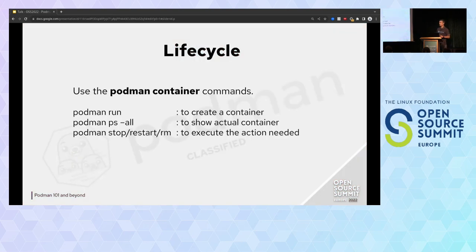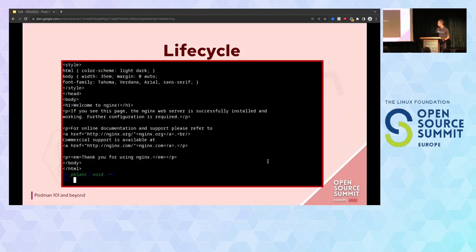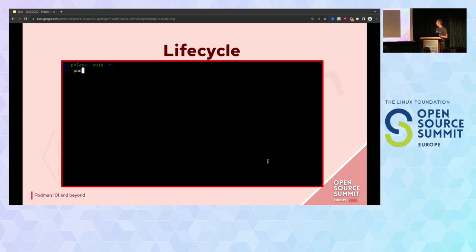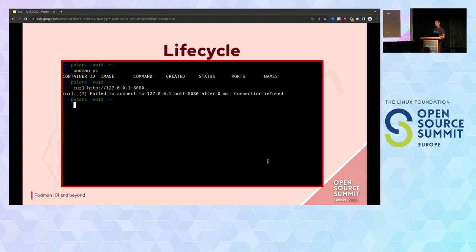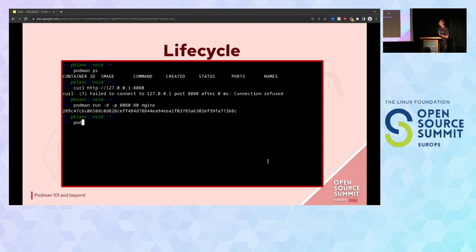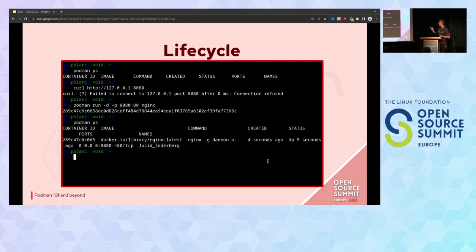Now we will see the container lifecycle — how to create a container, list it, stop and restart it. It uses the podman container command, and you also have shortcuts like podman run, podman ps, etc. I'm checking if I have any containers running on my server — I have nothing. I'm checking if I can access port 8080 — nothing there. So I'm running a container. With the -p option, I forward port 8080 on my local server to port 80 of my container. I execute the command to run the container — now I have my container running. If I curl again, I will see something.